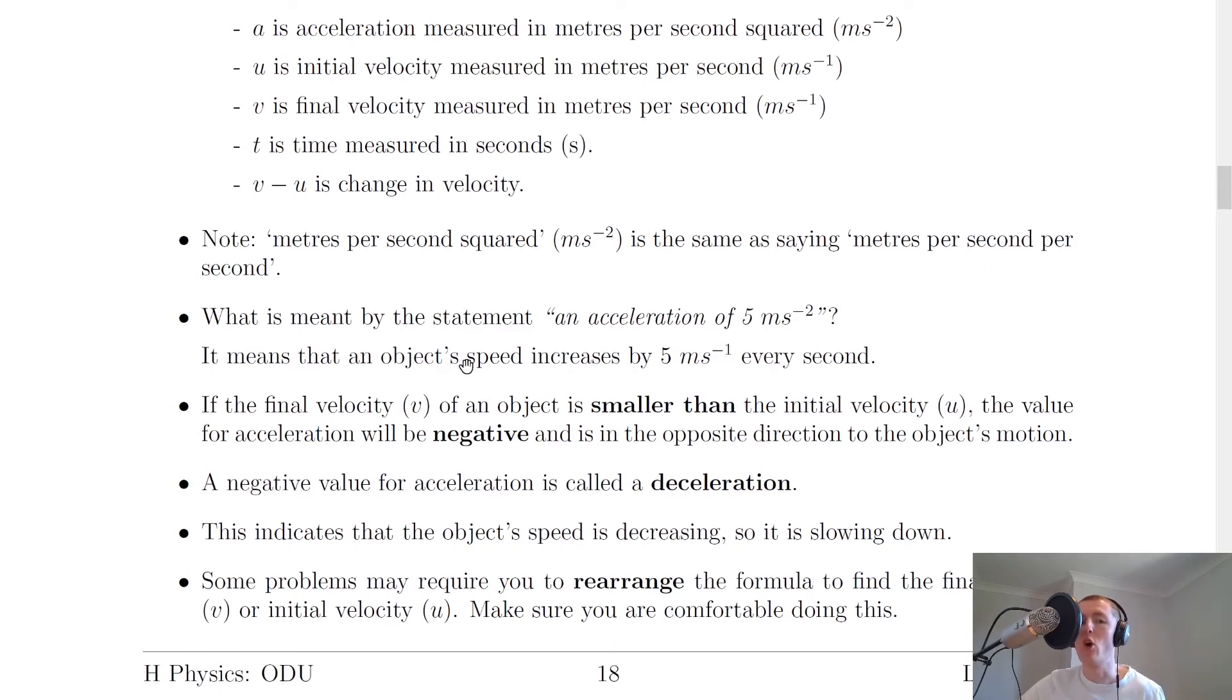And what this means is that an object's speed increases by 5 meters per second every second. So we've had to use our value of 5 in this question because it was 5 meters per second squared, and we've had to relate it to our definition of acceleration. So we've put that number into our definition, and it says that the object's speed or velocity increases by 5 meters per second every second.